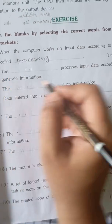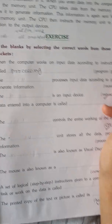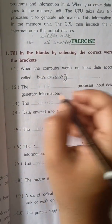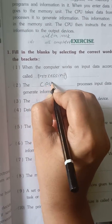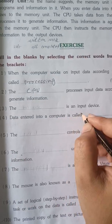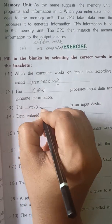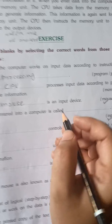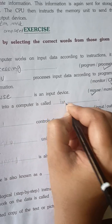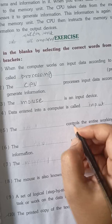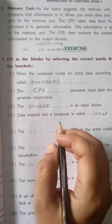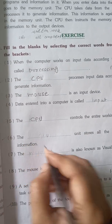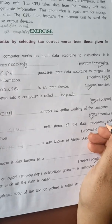Next, the blank processes input data according to generate information. So input data according to program generate, so CPU. Next, the blank unit stores all the data, programs, and information.